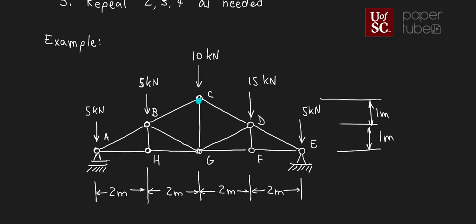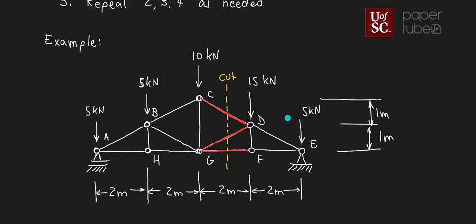Looking at the elements we need to calculate forces for — CD, GD, and GF — I'm going to propose a cut right here. I'm going to take the right-hand side of that cut. I'm choosing the right-hand side because I'll have to deal with fewer forces: on the right I have a 5 kN and a 15 kN force, while the left-hand side has a 10, a 5, a 5, plus the reaction forces. The answer should be exactly the same if you use the left-hand side.